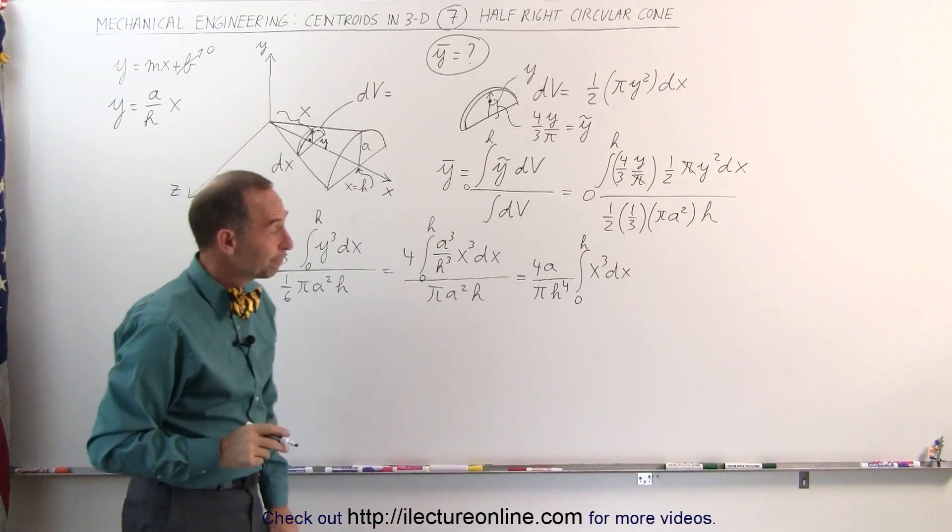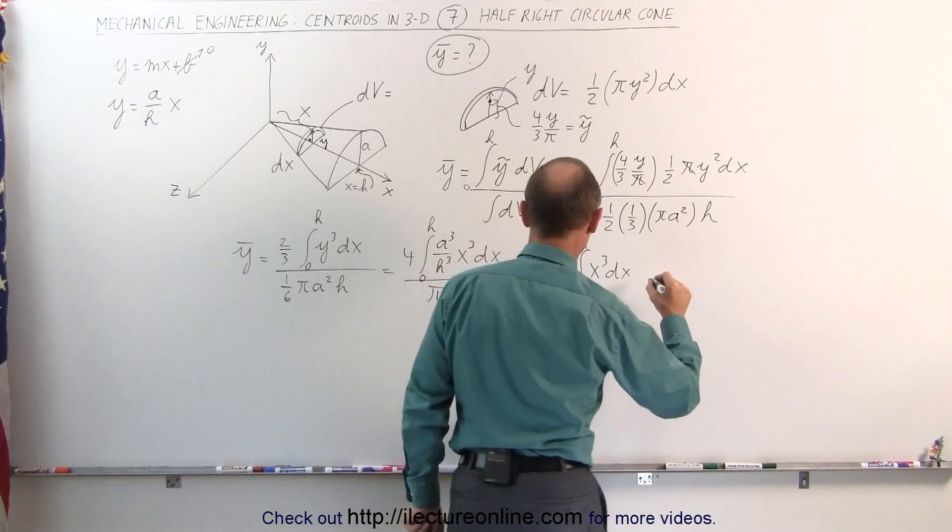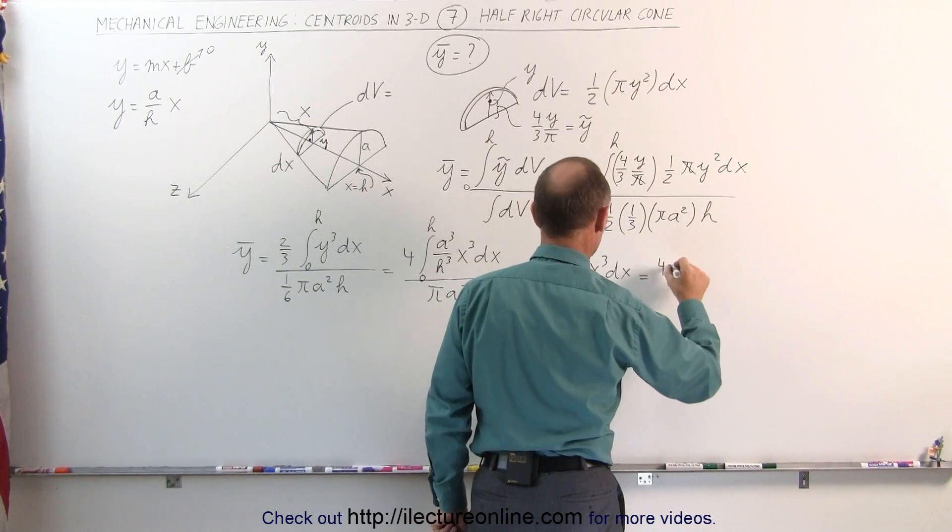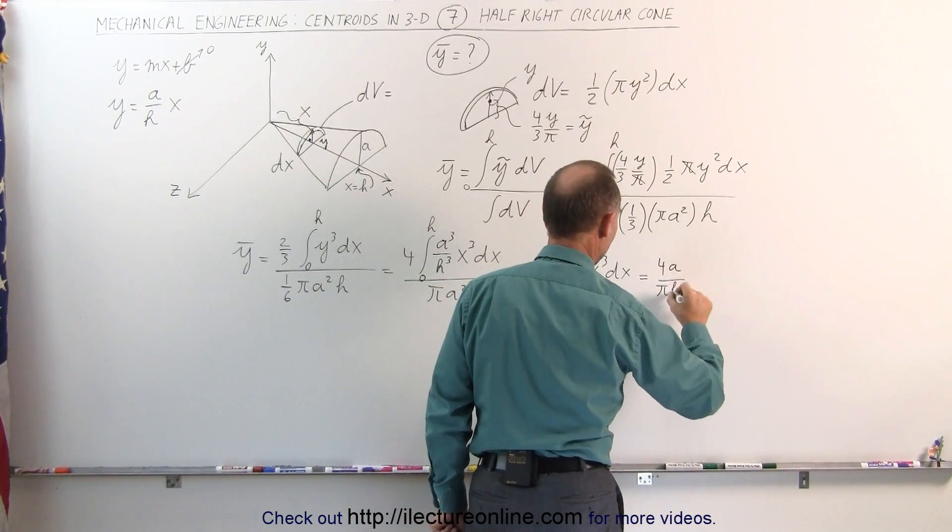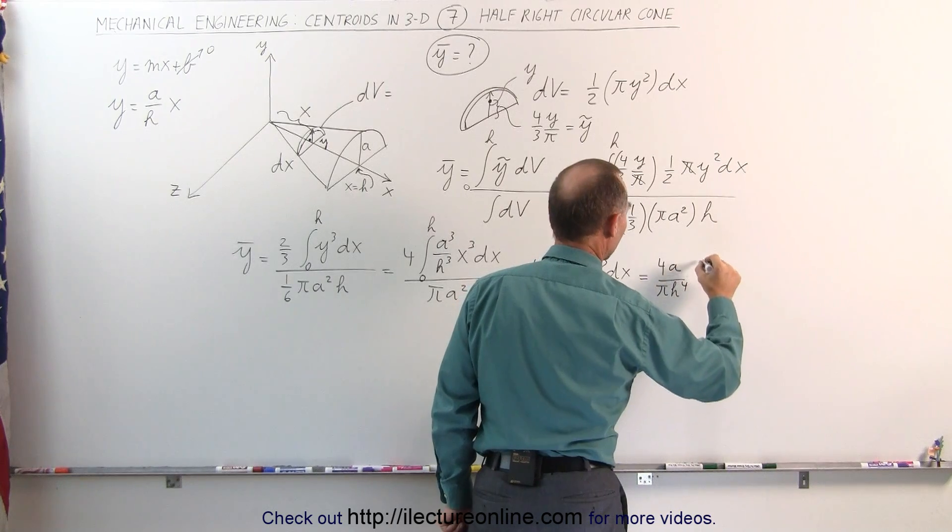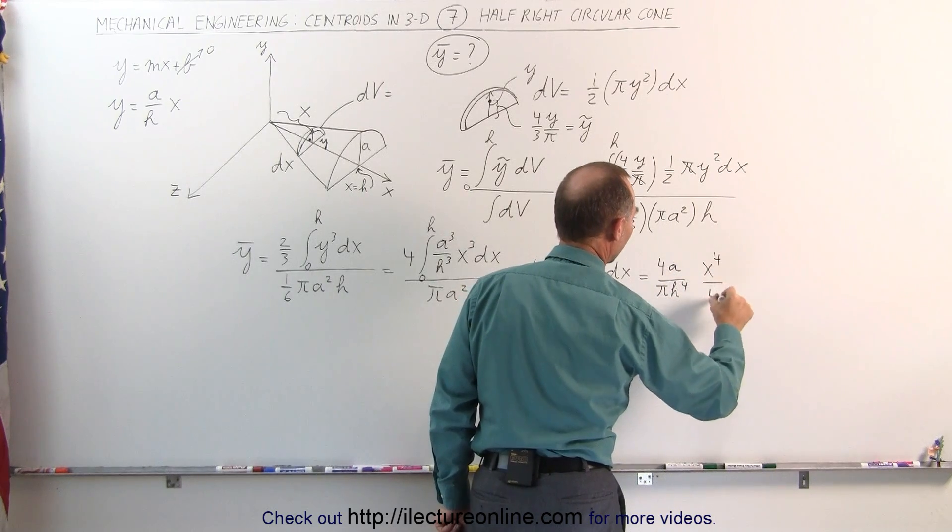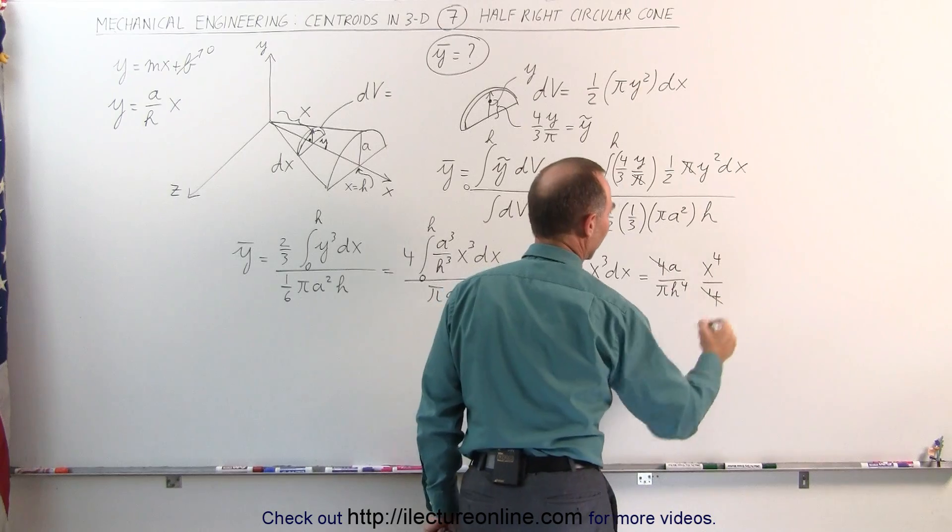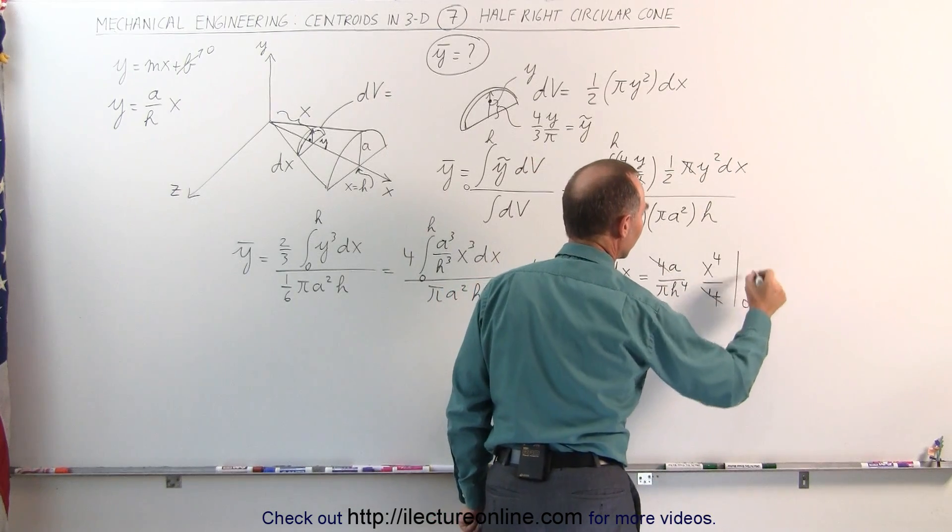Now we're ready to integrate. That becomes x to the fourth divided by 4. So this is equal to 4a divided by pi h to the fourth. And that becomes x to the fourth divided by 4. And you can see that this 4 cancels out that 4, evaluated from zero to h.